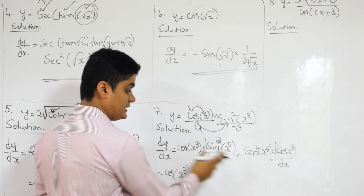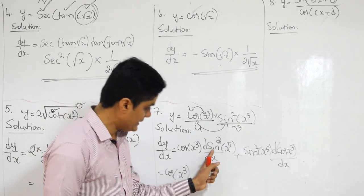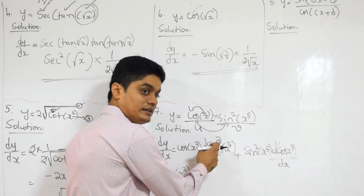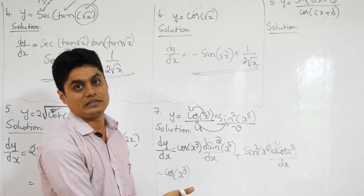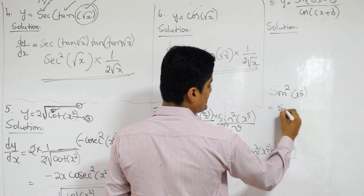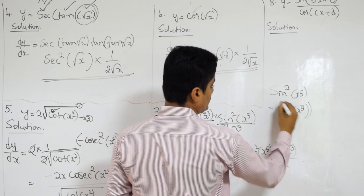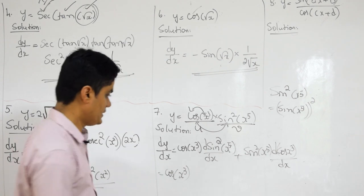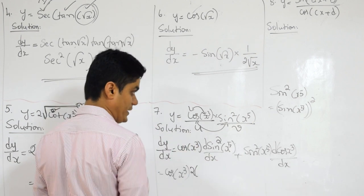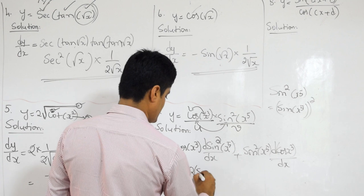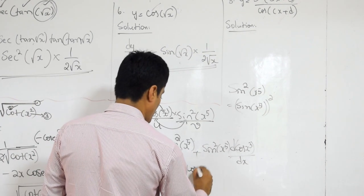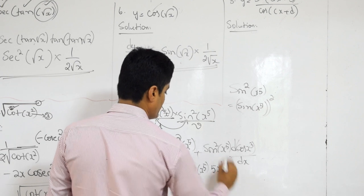Now it is equal to cos of X cubed. Be careful with sin squared. Tell me how many functions are combined: sin, then square, then X to the power 5. The order is: first square, then sin, then X to the power 5. Sin squared of X to the power 5 is nothing but sin of X to the power 5, whole power 2. Which is the outermost function? 2. What is the differentiation? 2 times sin of X to the power 5, then derivative of sin: cos of X to the power 5, then 5 into X to the power 4.